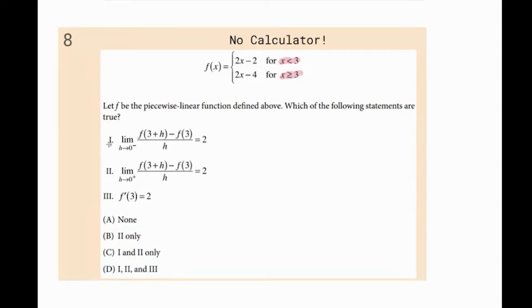So right away when you see this first one, Roman numeral one, it says the limit as h approaches zero from the left. So just think like negative 0.1, negative 0.001, that sort of thing. For that piece, we want the one that's less than it. So if you did three plus negative 0.1 or negative 0.001, it's going to be less than three. So you're going to want to use this piece here for that first one. I'm going to color code this red.